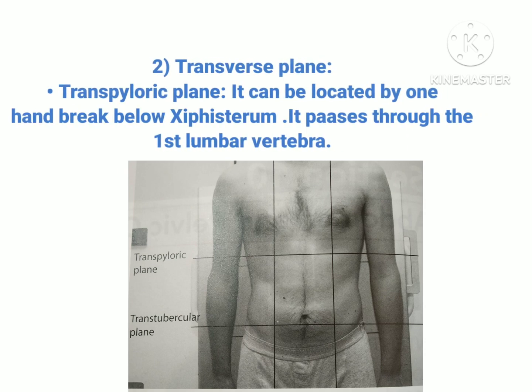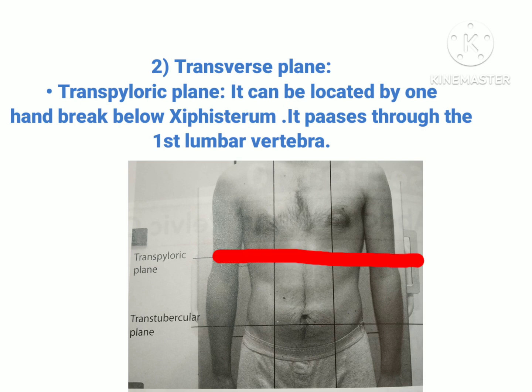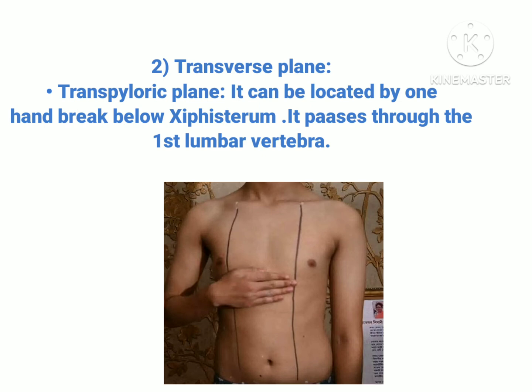Now discussing the second one — the transverse plane. There are two transverse planes on the abdomen. The first is the transpyloric plane. To locate it, we place one hand below the xiphisternum, which is the lowest point of the sternum. The horizontal line under the hand is the transpyloric plane. You should remember that the transpyloric plane corresponds to the first lumbar vertebra — that is what it passes through in the middle.